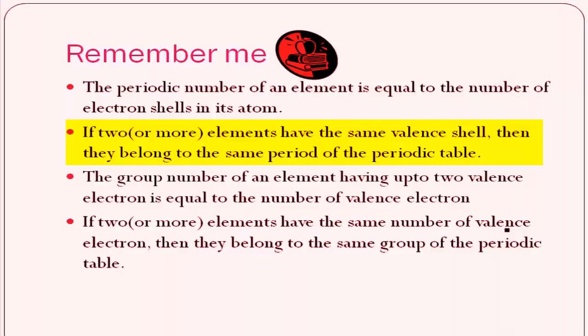Second point to remember: if two elements have the same valence shell, they belong to the same period of the periodic table. For example, if two elements have electronic configurations KLM 2,8,2 or KLM 2,8,7, they have the same valence shell and hence belong to the same period.